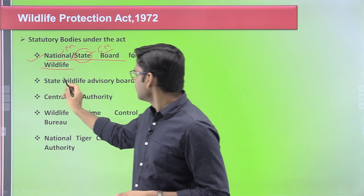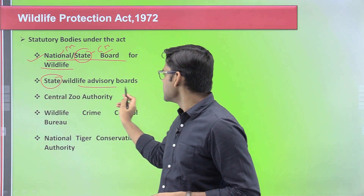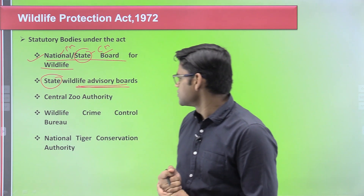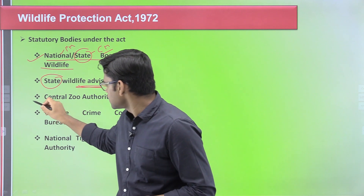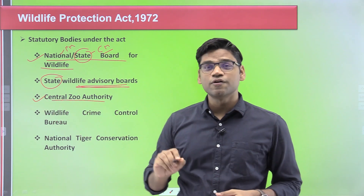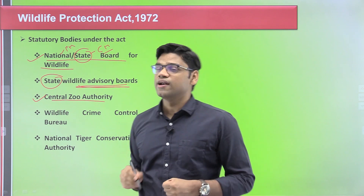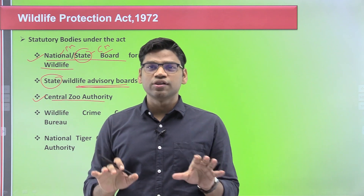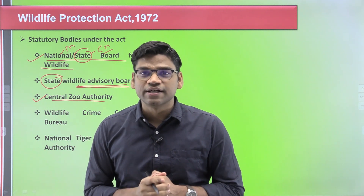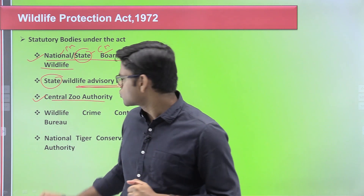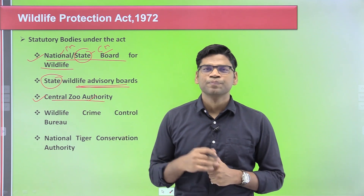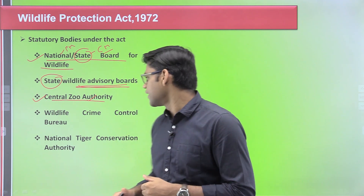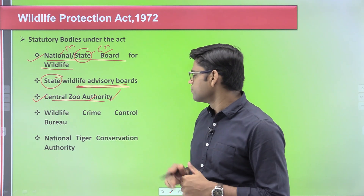At the state level, the State Board of Wildlife is chaired by the Chief Minister of that particular state. There are also state-level advisory boards that advise the state government on conservation and preservation of wildlife. Then there is the Central Zoo Authority — a statutory body established by the Wildlife Protection Act. It provides recognition to all zoos operating in the country, and also identifies various endangered animals that need to be propagated through captive breeding.